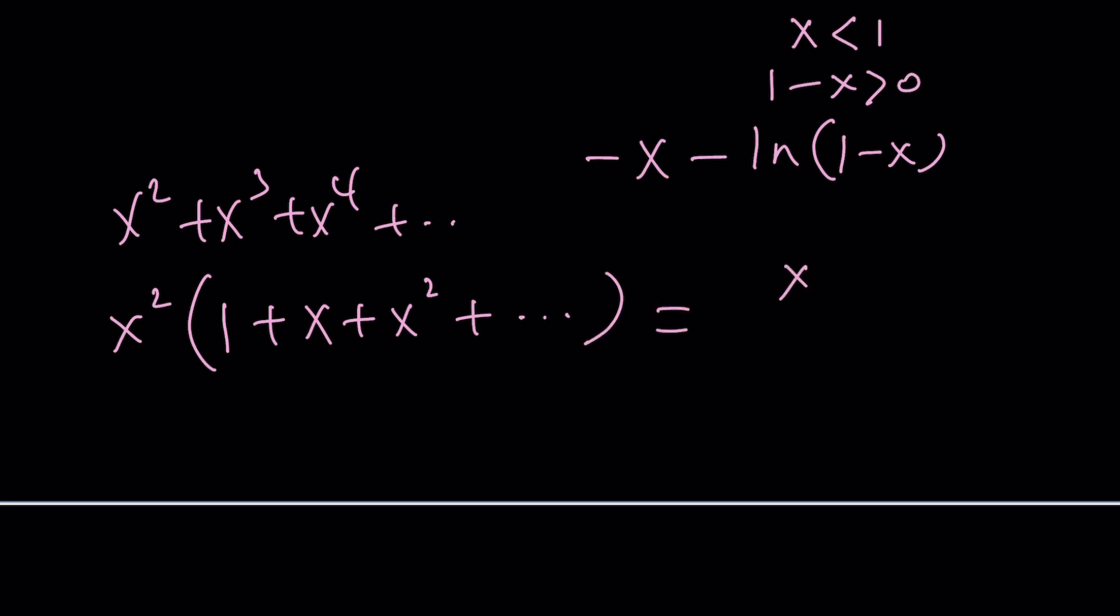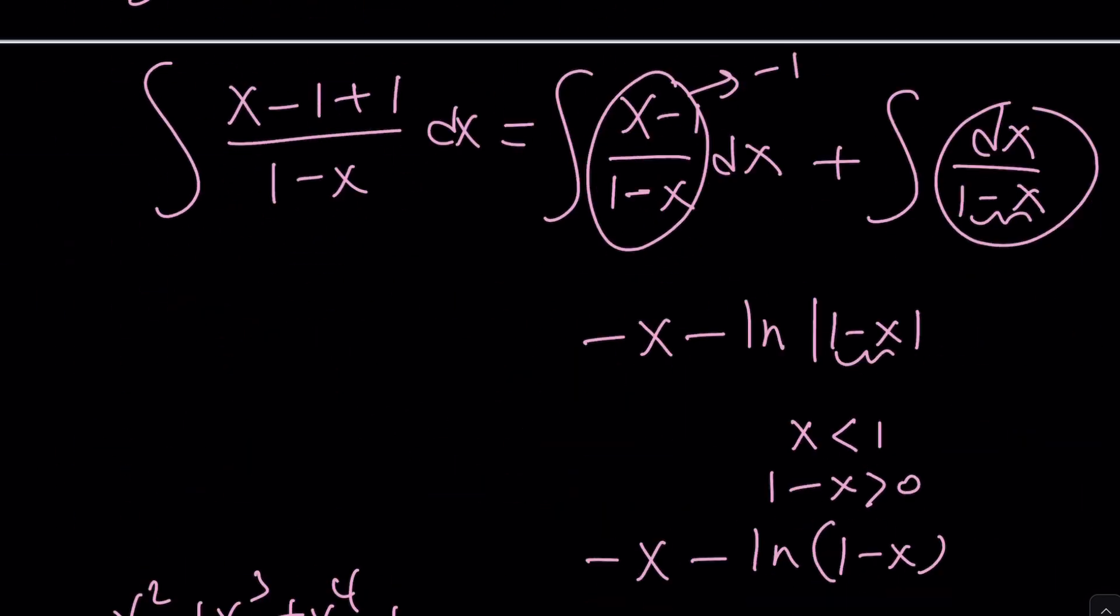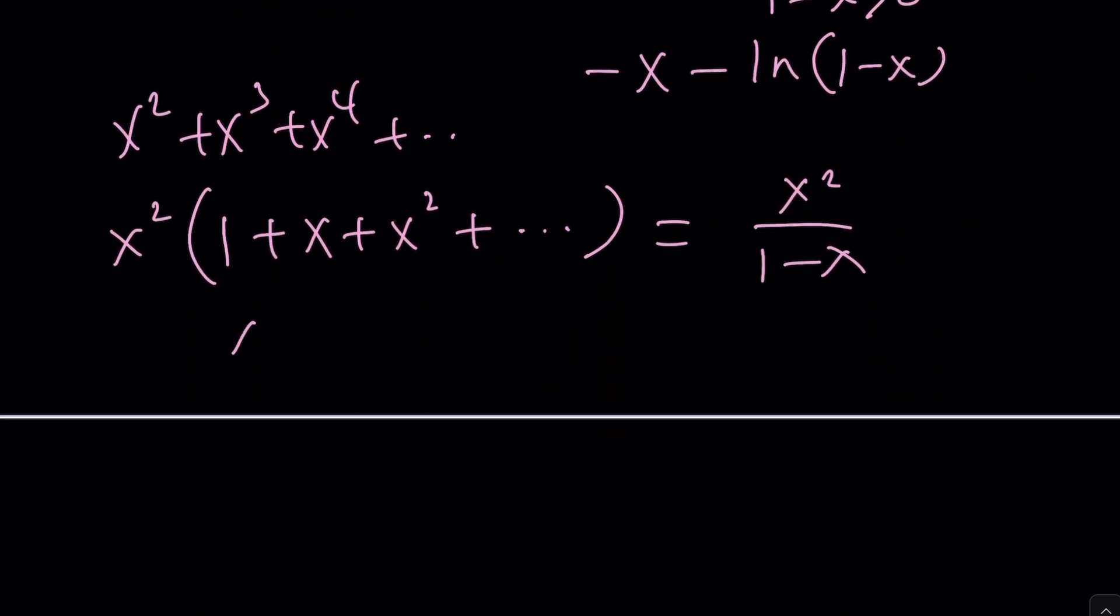And this will become x squared over 1 minus x. And then from this, you can just subtract this guy because they're being subtracted, right? Yes. The second fractional part. So, it's going to look like this. x squared over 1 minus x minus minus x minus ln 1 minus x.